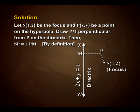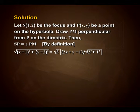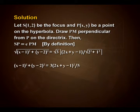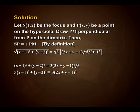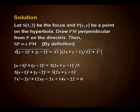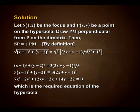Now, using distance formula, we have √((x−1)² + (y−2)²) = √3 × (2x + y − 1) / √(2² + 1²). On simplification, we have (x−1)² + (y−2)² = 3(2x + y − 1)² / 5. On simplification, 5[(x−1)² + (y−2)²] = 3(2x + y − 1)². On solving, we have 7x² − 2y² + 12xy − 2x + 14y − 22 = 0, which is the required equation of the hyperbola.